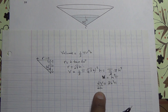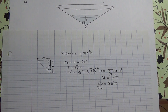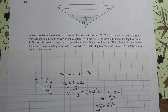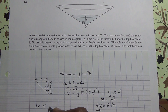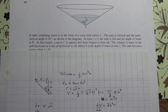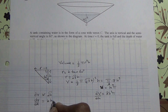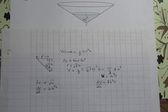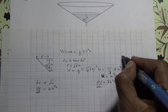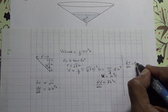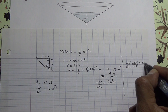We are also given that the volume of water decreases at a rate proportional to the square root of h. That means dV/dt is proportional to the square root of h, which is h to the power of one half. So dV/dt equals negative k times h to the half. We can connect these two using the chain rule: dV/dh equals dV/dt times dt/dh.